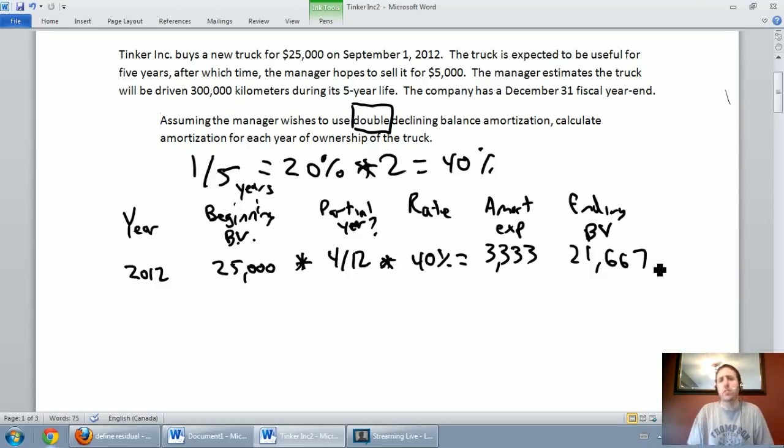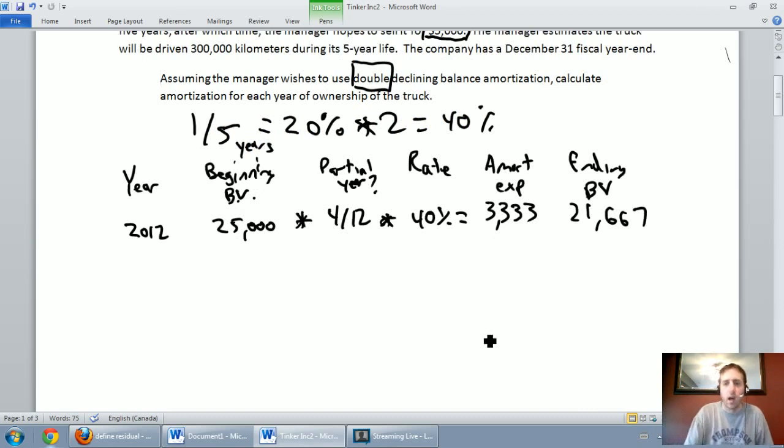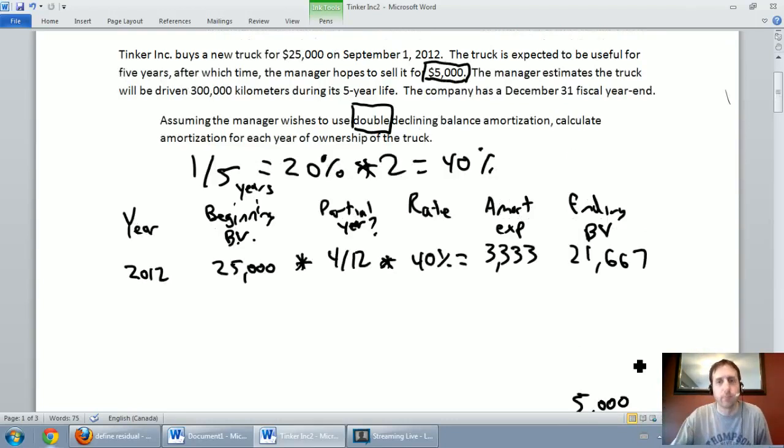Now you might be asking yourself, what about that $5,000 residual value that we've been worried about? Well, $5,000 residual value isn't going to come into play until the very end. But yes, when we finish this question, I need to remind myself, I've got to stop when I get to a $5,000 residual value. I can't amortize past that. I have to end on that $5,000 number, but we'll worry about that later.